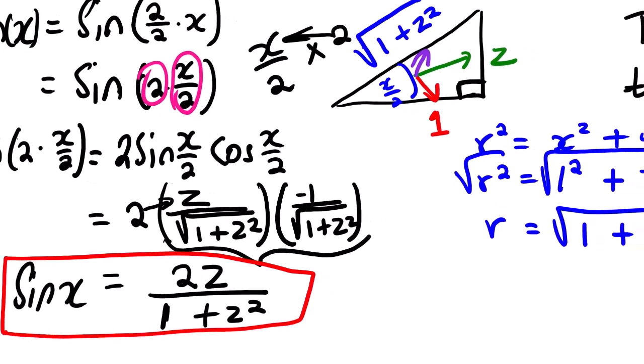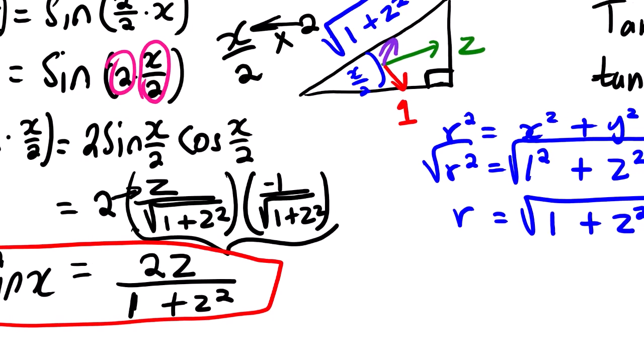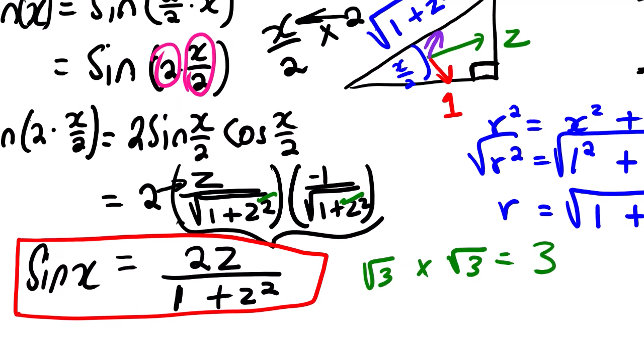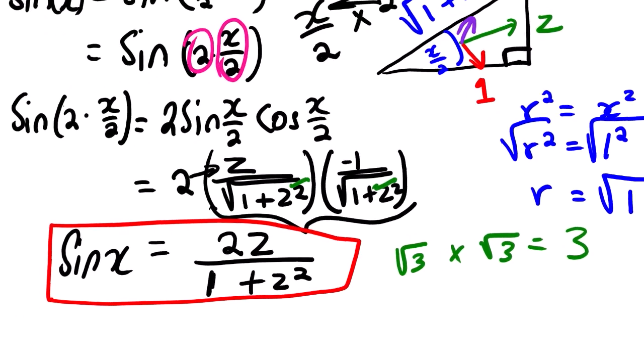To explain this further — we know that √3 × √3 = 3, simply the number inside the square root. The same applies here: √(1 + Z²) × √(1 + Z²) = 1 + Z².